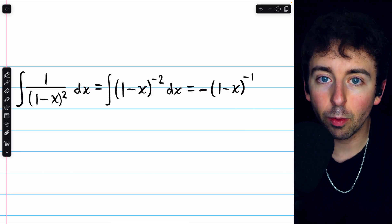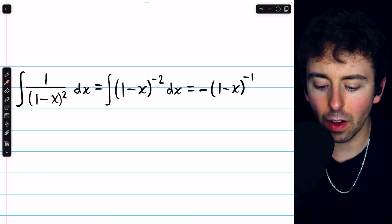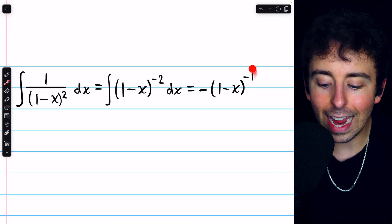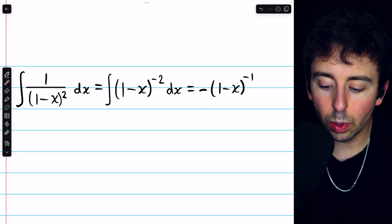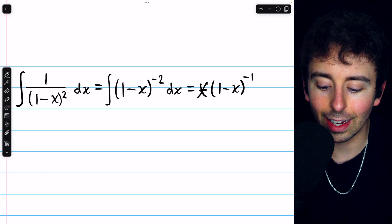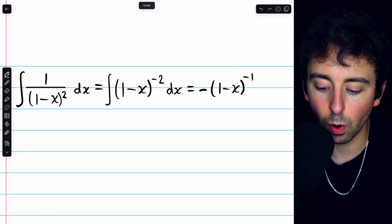However, be careful because we have 1 minus x, which is itself a function inside these parentheses. So if we were to take the derivative of this, we would get a multiplication by negative 1, which would cancel out with that negative. And then this power would reduce to negative 2, just like we want.